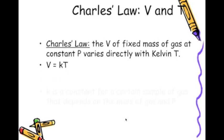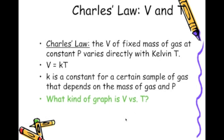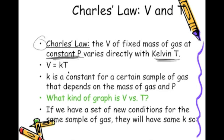So, let's look, and we see that we have Charles' law, which is the volume of a fixed mass of gas at a constant pressure. So, we see that's how we differentiate between the two. It varies directly with the Kelvin temperature. And it creates that constant that we solve, and that constant is for a certain sample of gas that depends on the mass of the gas and the pressure. So, what we see is that if we have a set of new conditions for the same sample of gas, then we will have the same constant. So, we can derive this equation, and this is Charles' law's equation.